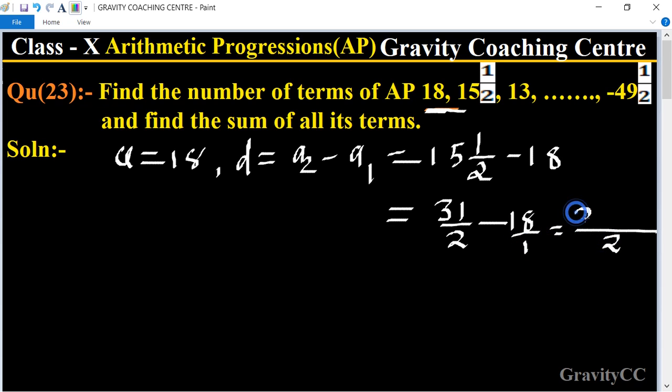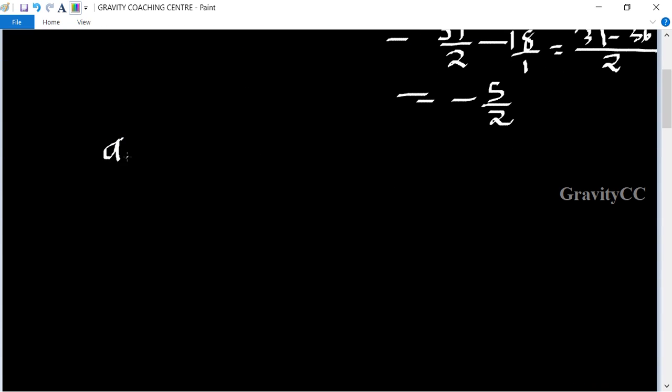Equals (31 minus 36)/2, equal to minus 5/2, which is d. And the last term is given: minus 49 and 1/2. a_n equals minus 49 and 1/2, equal to minus 99/2. And we know that the formula of nth term a_n equals a plus